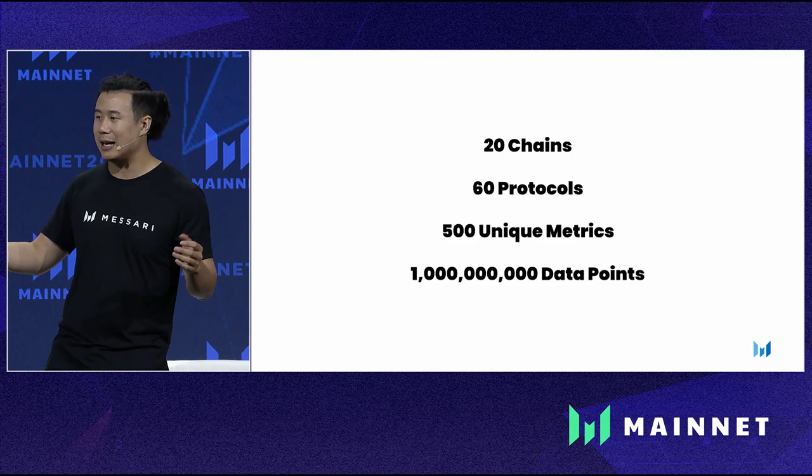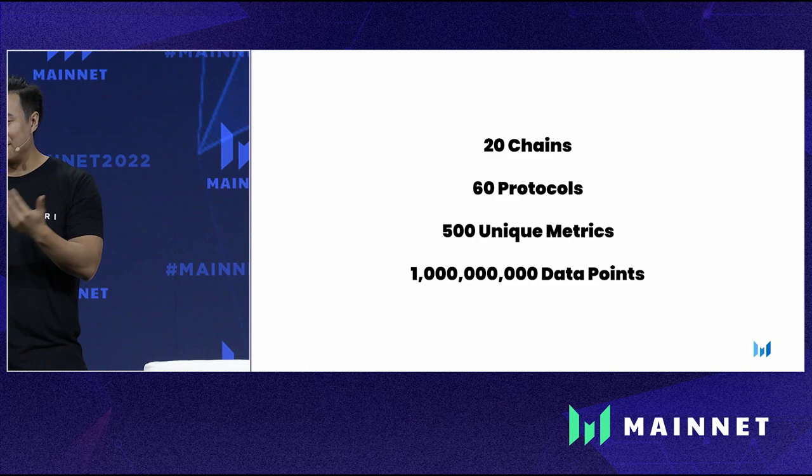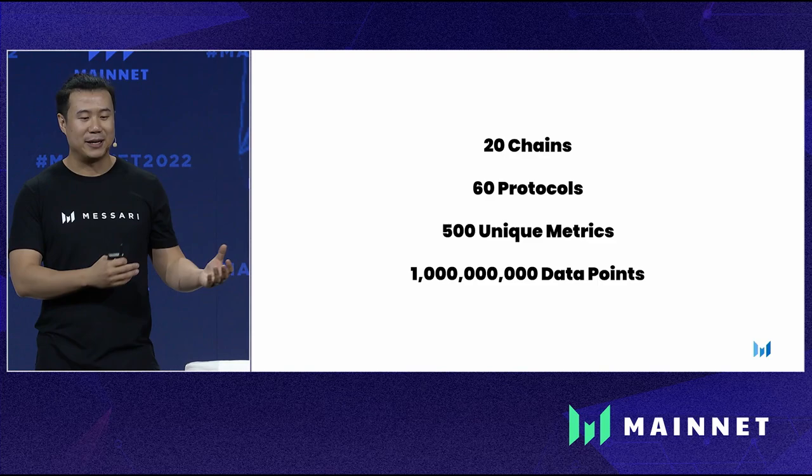To give you a sense of where we are, we have indexed data from 60 different protocols across 20 different chains. Combining all protocol types, we've surfaced over 500 unique metrics with a total of 1 billion data points across all of our subgraphs. For each metric, we're not only surfacing its current value — we've indexed its entire history, meaning you can get the data at every single block in the past. For a lot of this data, it is the first time this has ever been done, and you'll find data here that you cannot find anywhere else.